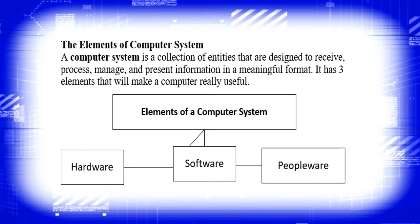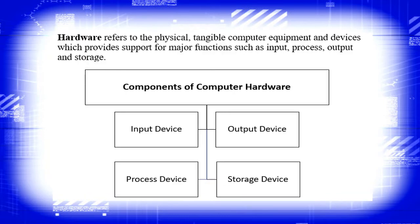First, we have hardware. Hardware refers to the physical, tangible computer equipment and devices which provide support for major functions such as input, process, output, and storage. The components of computer hardware are: input device, output device, process device, and storage device.